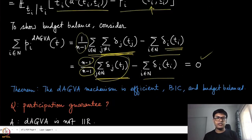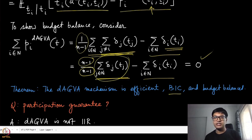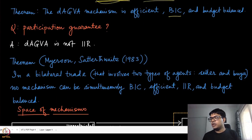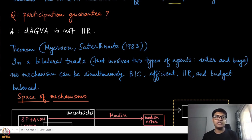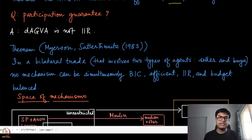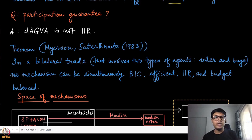We can conclude that the dAGVA mechanism is efficient by design, BIC, and budget balanced — satisfying these three properties at the compromise of strong incentive compatibility. However, regarding individual rationality: one can create examples showing dAGVA is not interim individually rational. The Myerson-Satterthwaite impossibility result shows that even in the simplest bilateral trade setting with one seller and one buyer, no mechanism can simultaneously satisfy BIC, efficiency, interim individual rationality, and budget balance.